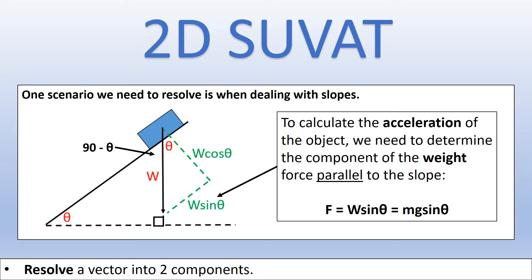What we need to do is figure out the component of the weight force parallel to the slope, which is W sin θ. We take the weight force and split it into a right-angle triangle. The angle at the top is 90 minus θ, so the component perpendicular to the slope gives us the angle θ inside the triangle. Using trigonometry, with hypotenuse W and angle θ, the side opposite is W sin θ.